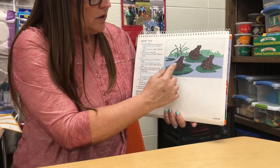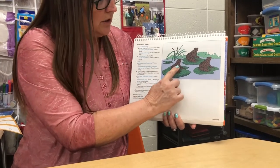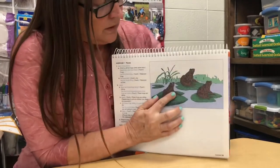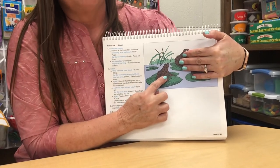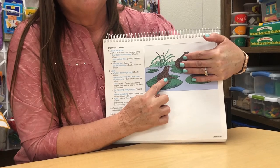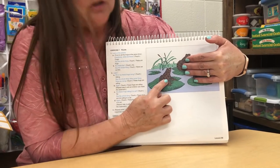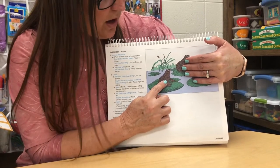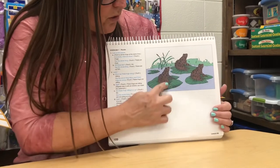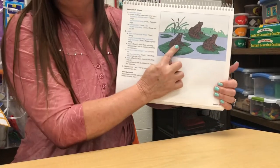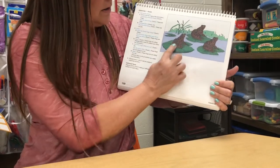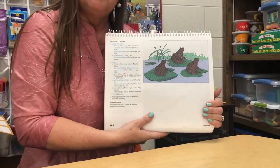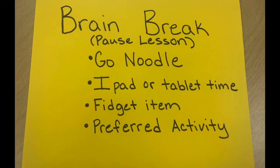Now if I just touch one frog, would I still say frogs or would I say frog? Frog. Very good, because it's just one. So we would say frog. But if there's more than one, we're going to say what? Frogs. Very good. Frogs. Frogs. Good job. Frogs. Frogs.